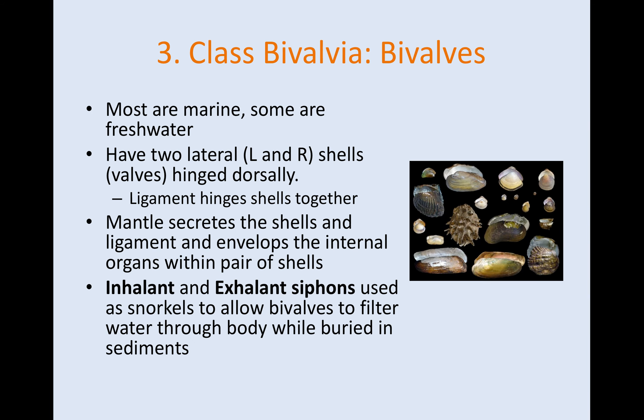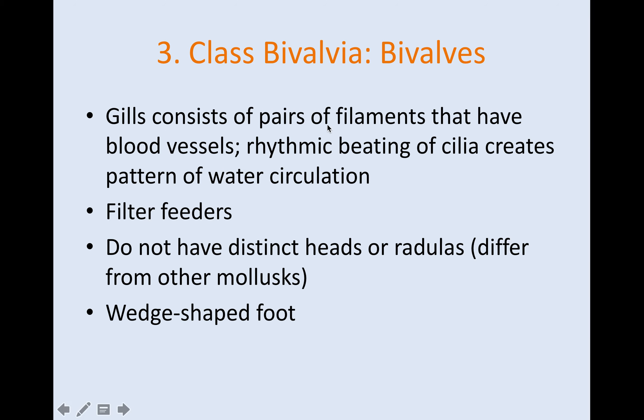Bivalves — most of them are marine, though there are some freshwater ones. They have two shells, left and right, that hinge dorsally. Cutting through the muscle that holds the shells together during dissection can be pretty tough. They don't have a radula. They filter feed using siphons that act like snorkels, filtering water through the body when buried in the sand. Their gills have filaments with blood vessels. They have no distinct heads, no radula, and a wedge-shaped foot to help burrow in the ground.